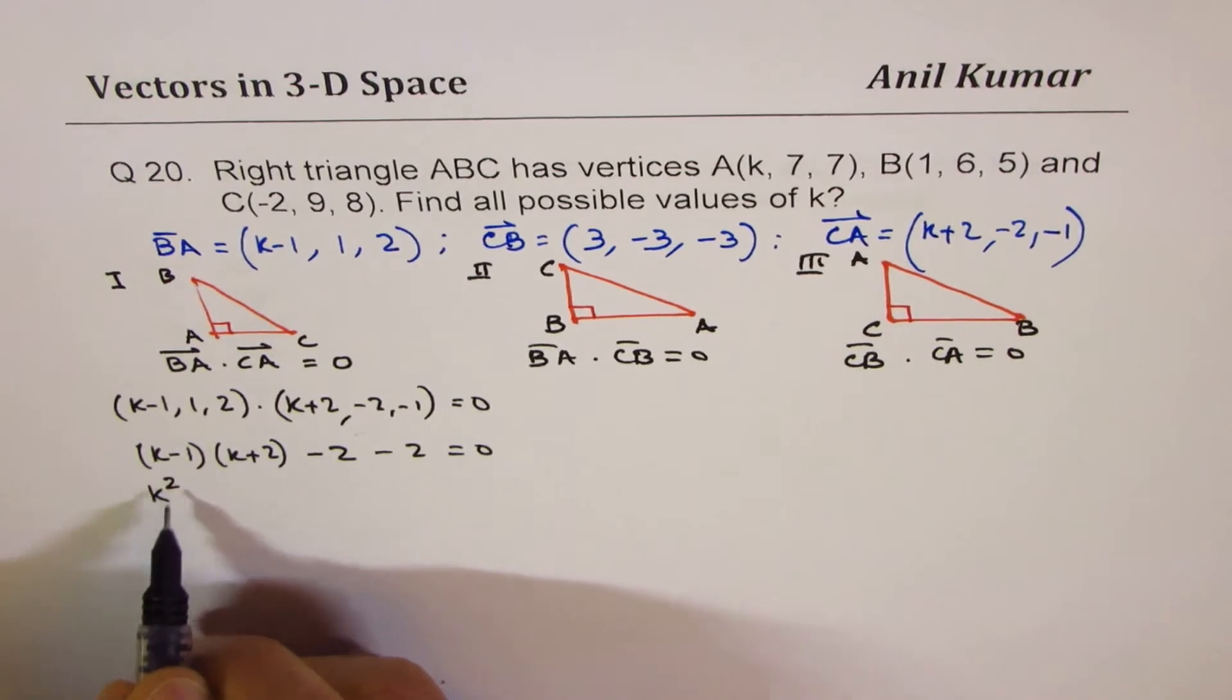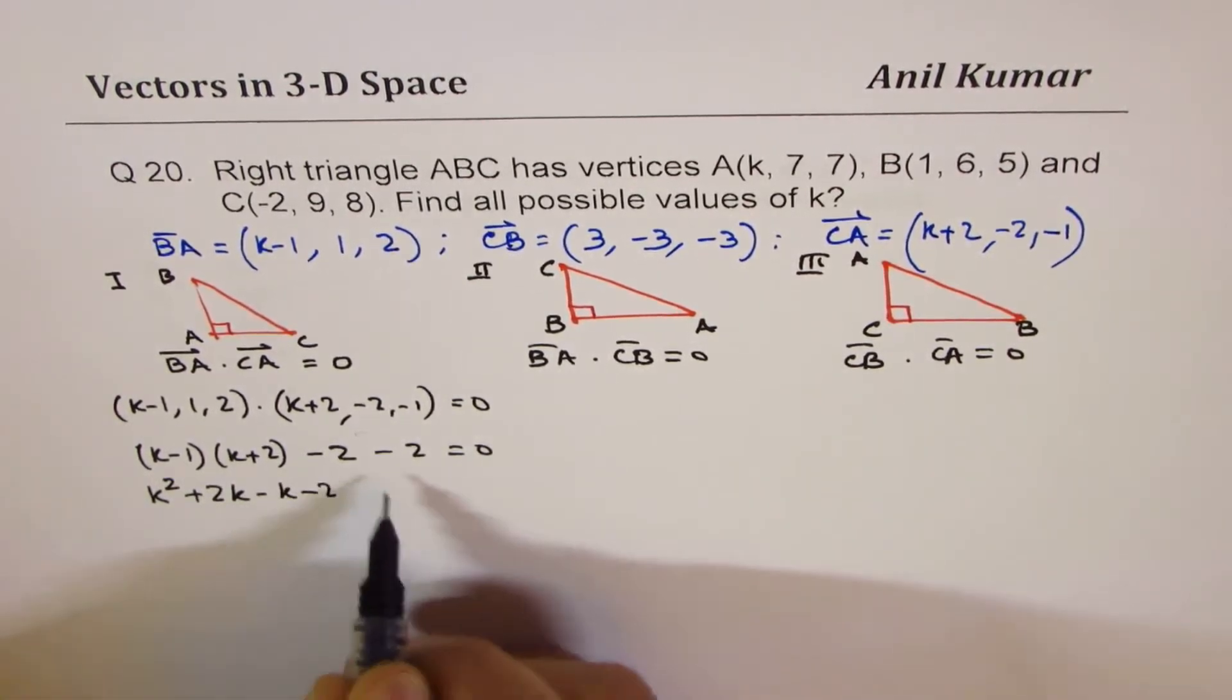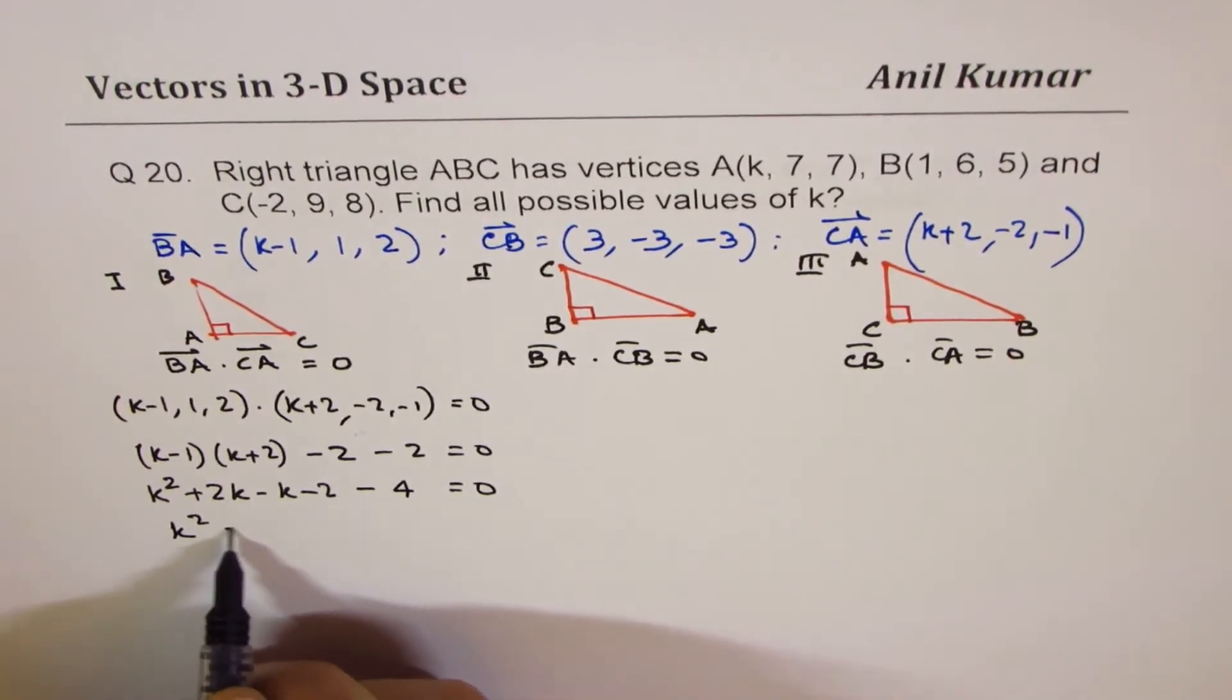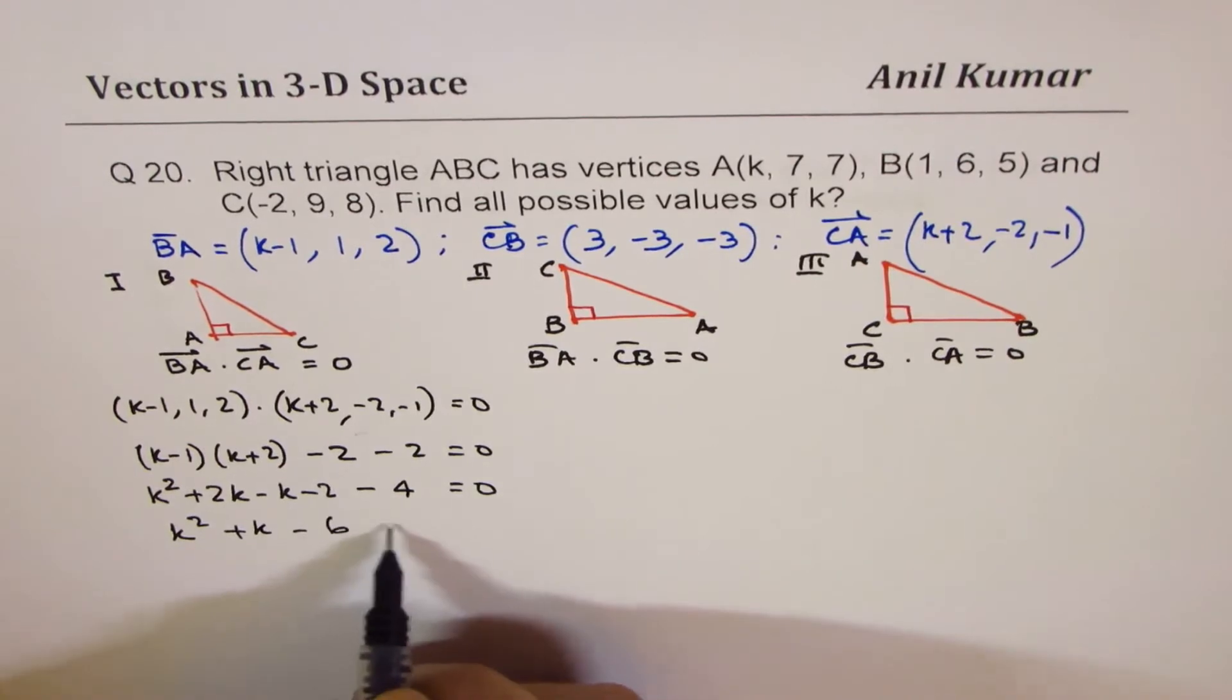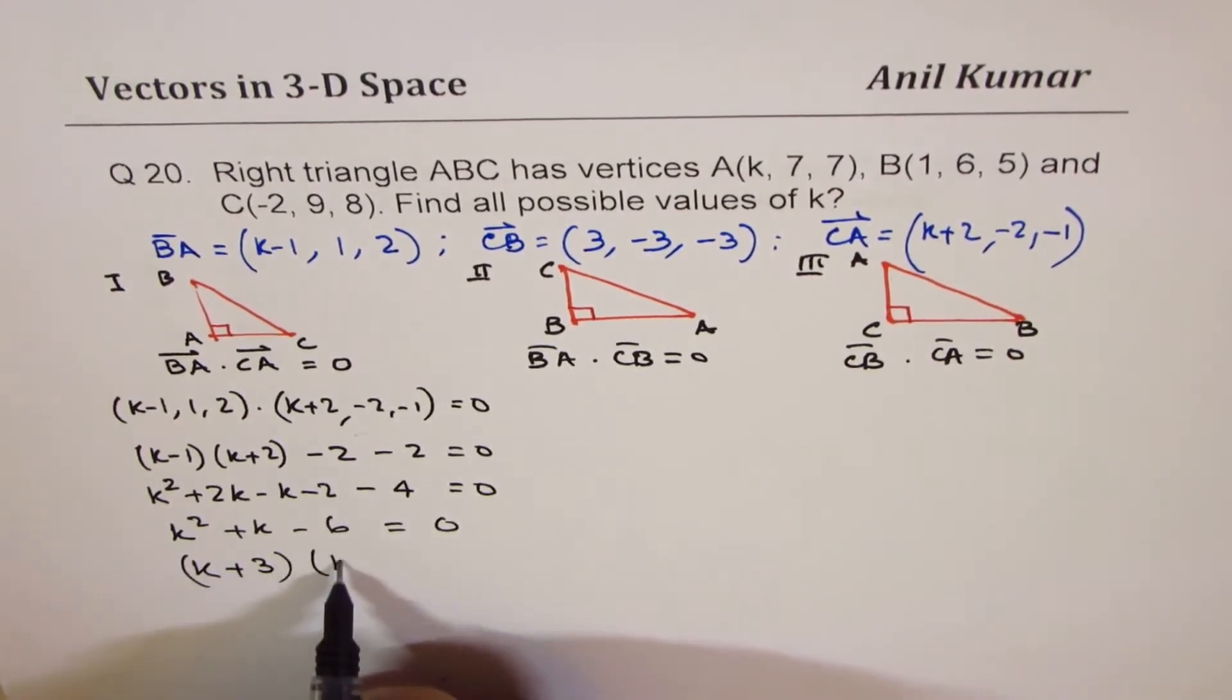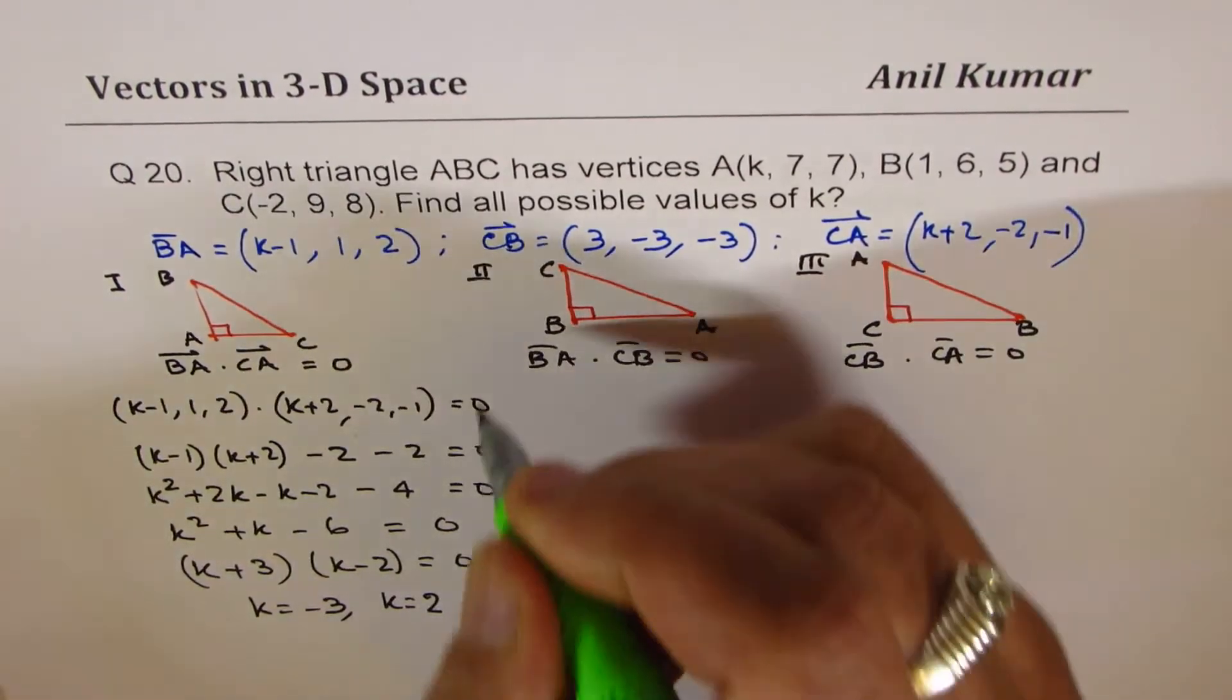So K² + 2K minus K minus 2, and this is minus 4 equals to 0. So we have K² + K − 6 equals to 0. You could factor this. Product of minus 6, sum of plus 1, so that means K+3 times K−2 equals to 0. So that gives you K equals to minus 3 or K equals to plus 2. So that becomes our case number 1.